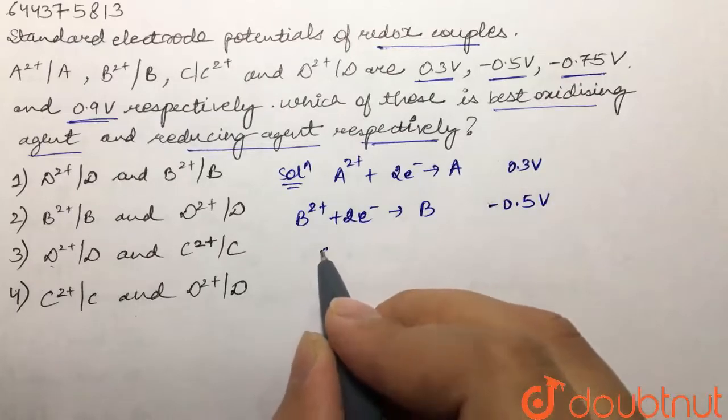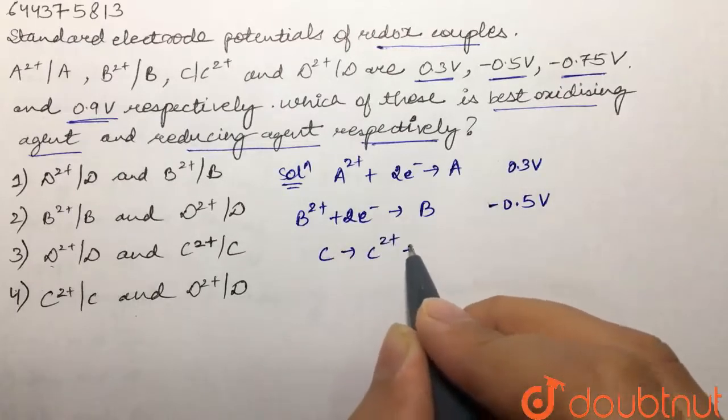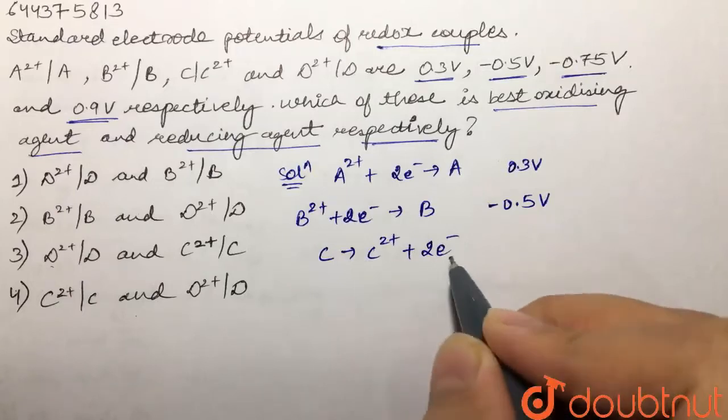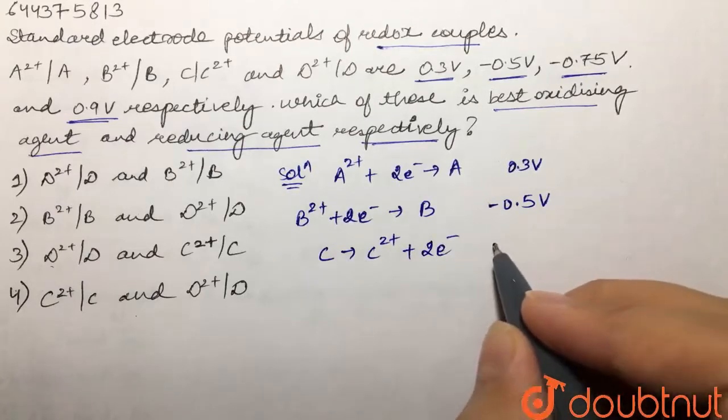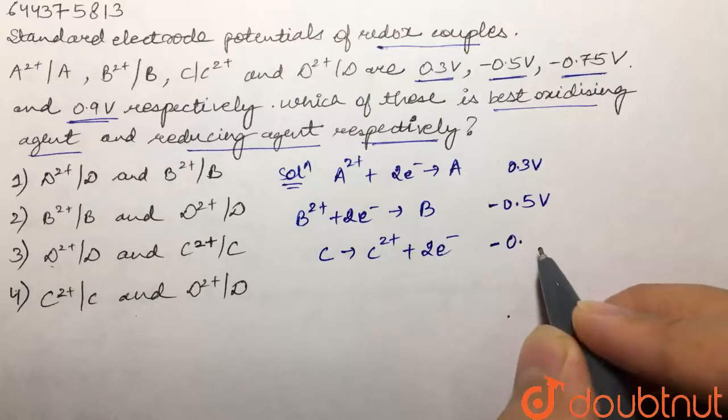Then the next is C is getting converted into C²⁺ plus 2 electrons. This is oxidation and the value of electrode potential is -0.75V.